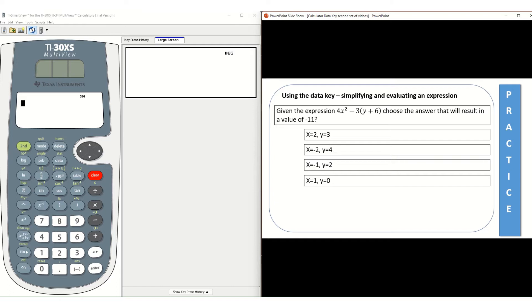So the example on the screen says given the expression 4x squared minus 3 times y plus 6, choose the answer that will result in a value of negative 11. And so many of you have probably already learned that you can take the different options or answer choices they give you and substitute them into the expression in order to see which one gives you negative 11.